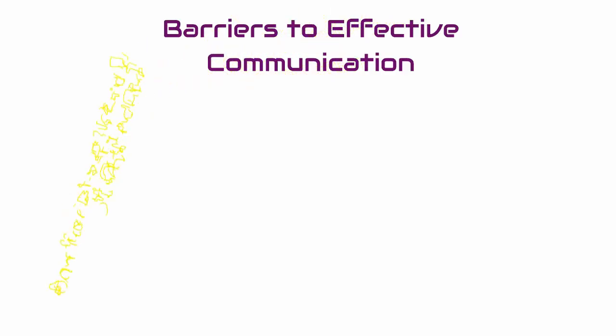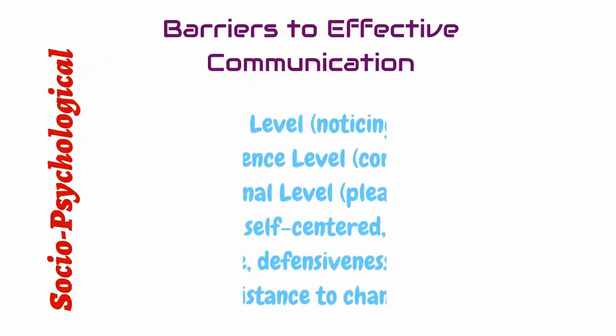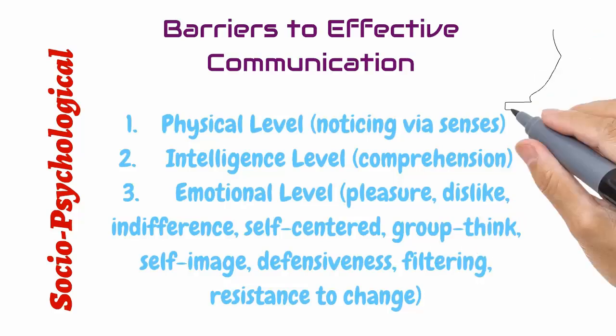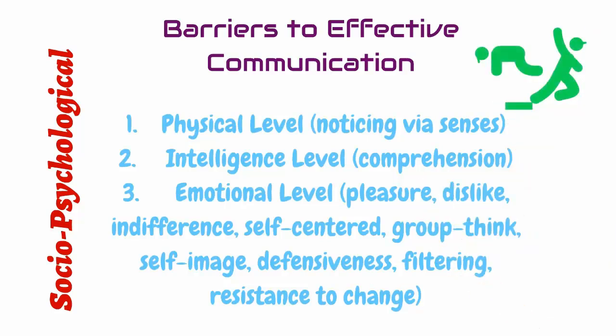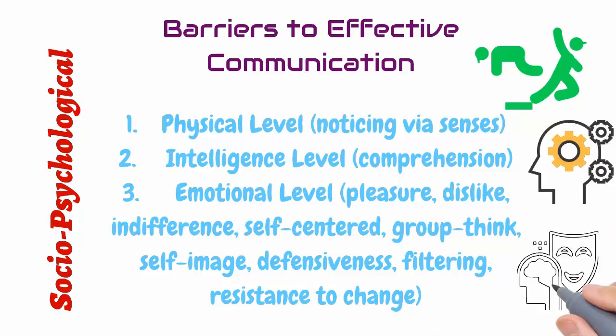Another type of barrier is of the social psychological manner. These are problems of understanding and interpretation of the message due to socially learned and personal attributes of the receiver. A message is received at three levels: the physical level, which involves noticing through the senses; the intelligence level, which deals with the comprehension of the message; and the emotional level, which is a feeling associated with the message, like pleasure, dislike, or indifference.